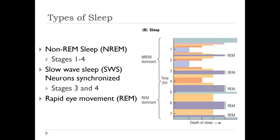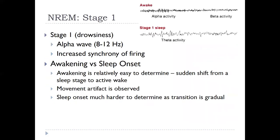To give you a rundown again of the types of sleep: we have non-REM sleep, represented as NREM, which covers stages one through four. We have slow wave sleep, which shows synchronization of neurons at stages three and four. And then rapid eye movement, which is its own different type of sleep. The sleep architecture hypnogram to the right illustrates this — it's easier to see when oriented on its side, and we'll go into more detail about that later.